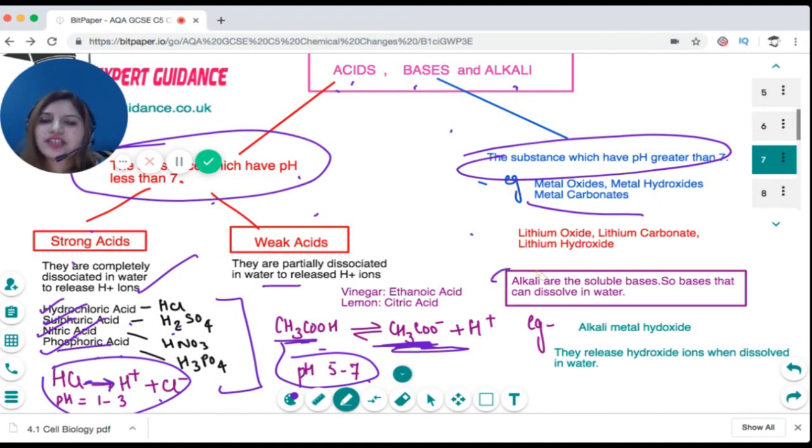There's another term often used for metal hydroxides: alkalis. What are alkalis? Alkalis are nothing but bases that can dissolve in water and make a solution. Soluble bases are alkalis and they release hydroxide ions when dissolved in water. For example, Group 1 and Group 2 hydroxides.